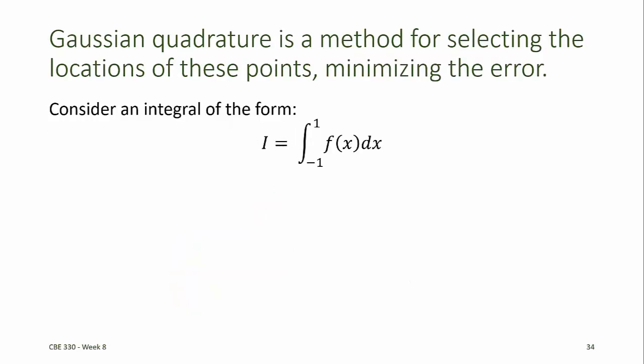Gaussian quadrature is a method for selecting the locations of the points to approximate the integral that minimizes the error.